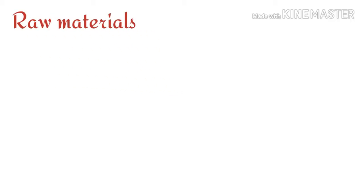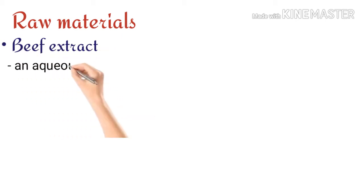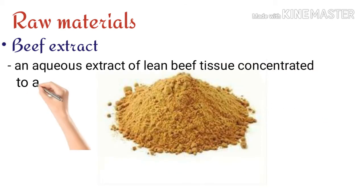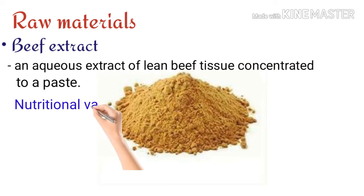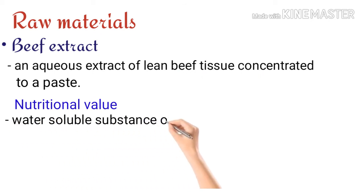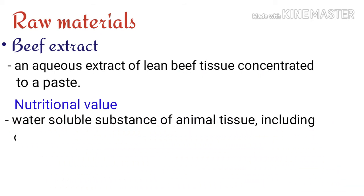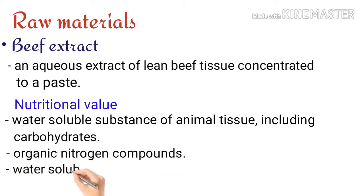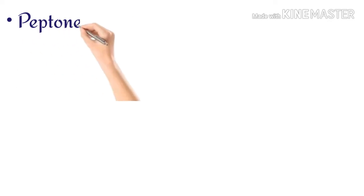The first raw material is beef extract. This is an aqueous extract from lean beef tissue that is concentrated to a paste. Its nutritional value comes from water-soluble substances from animal tissue, including carbohydrates, organic nitrogen compounds, water-soluble vitamins, and salts.